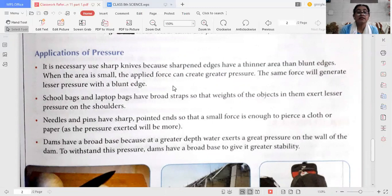Now in school bags and laptop bags, they always have broad straps. Why? So that the weight of the objects in them exert less pressure on the shoulder. Because if the straps are broader, the contact area is bigger or larger, so it will exert lesser pressure on the shoulder.